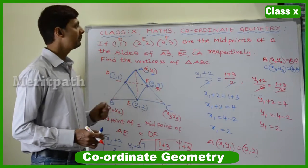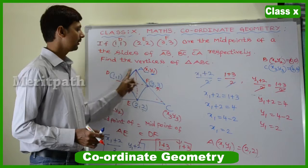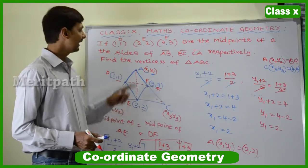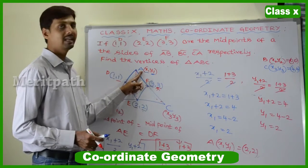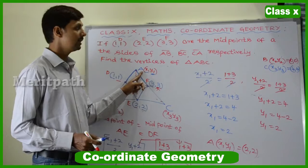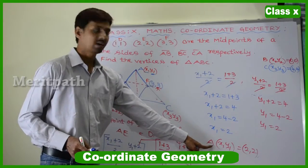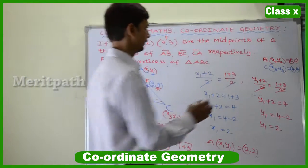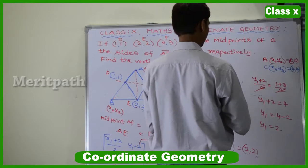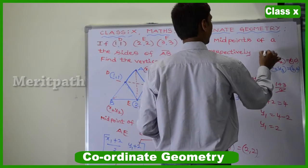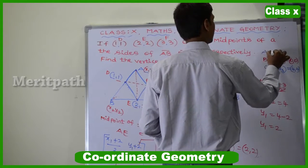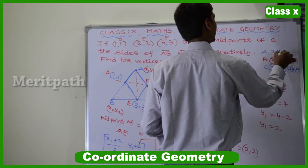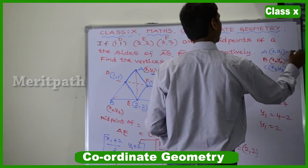The midpoints of the triangle were given, and we have now found all three vertices. A(x1, y1) equals (2, 2), B(x2, y2) equals (0, 0), and C(x3, y3) equals (4, 4).